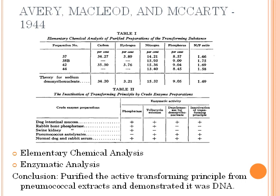Avery, McLeod, and McCarty undertook an experiment in 1944 based on the findings of Griffith. Starting with large aliquots of virulent smooth bacterial cultures, they successfully isolated a highly purified sample with strong capability to transform rough cultures into smooth cultures. Using an elementary chemical analysis shown in Table 1, they determined that several independent preparations of transforming principle had a chemical composition close to that known for sodium deoxyribonucleate, or DNA. To verify this assertion, they subjected preparations of the transforming principle to crude enzyme preparations from several animal and bacterial sources. Only those sources known to contain DNase fully inactivated the transforming principle.